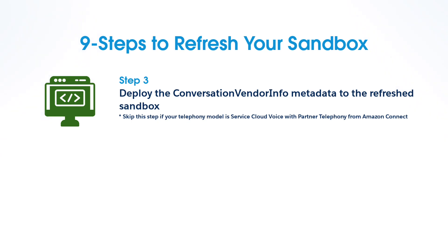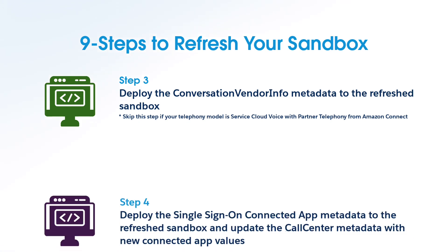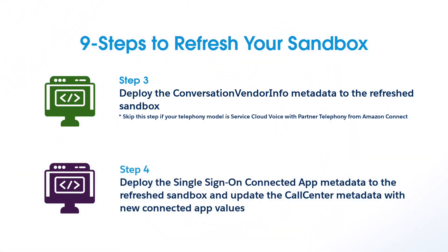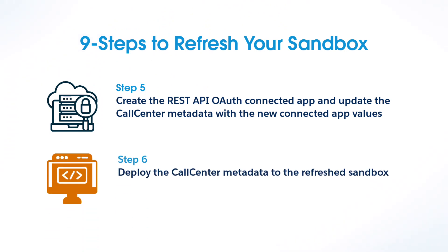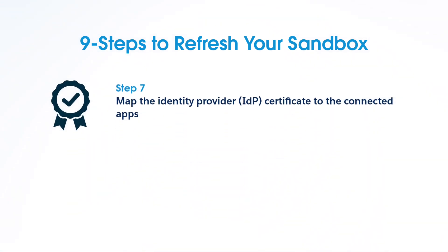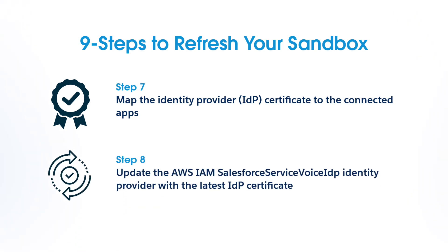After the sandbox refresh, you'll need to deploy the Conversation Vendor Info metadata to the refreshed sandbox. Additionally, deploy the Single Sign-On Connected app metadata and update the Call Center metadata with the new Connected app values. Next, you'll create the REST API OAuth connected app and update the Call Center metadata with the new Connected app values. Then, deploy the Call Center metadata to the refreshed sandbox.